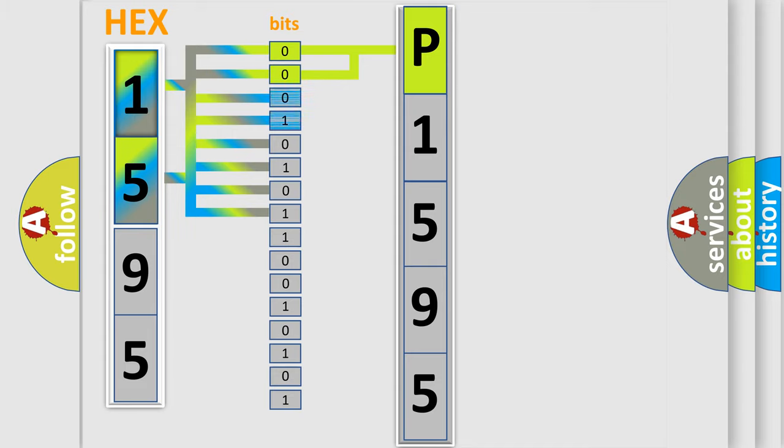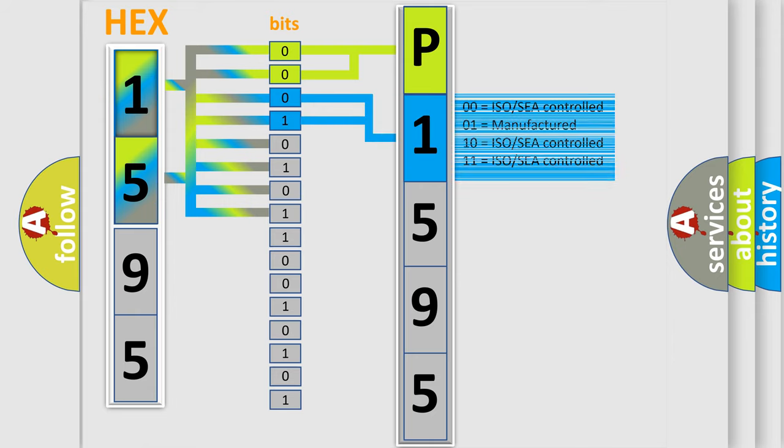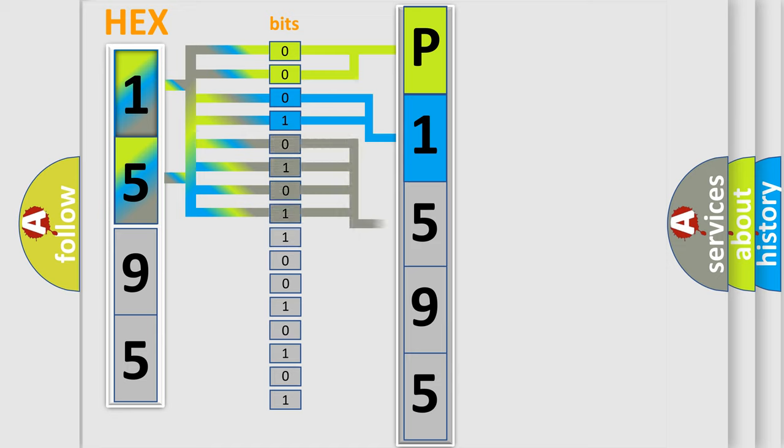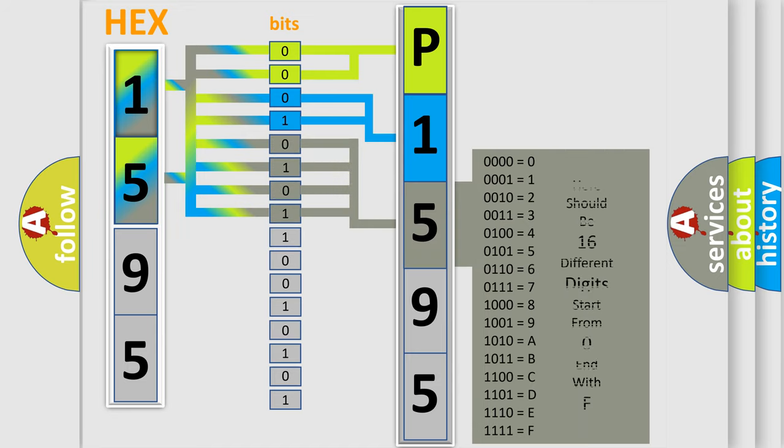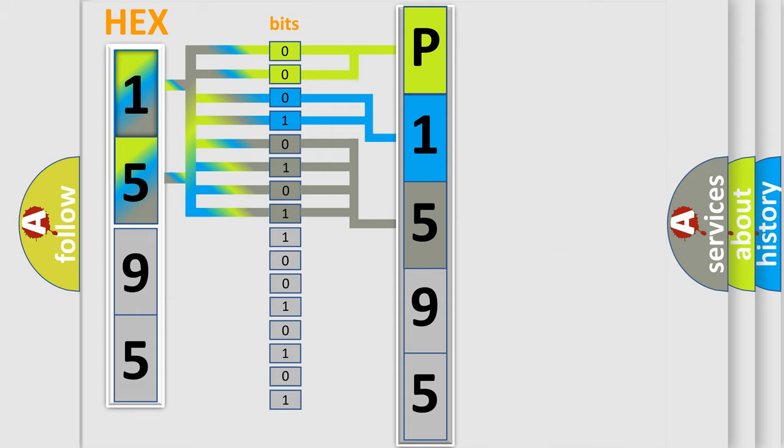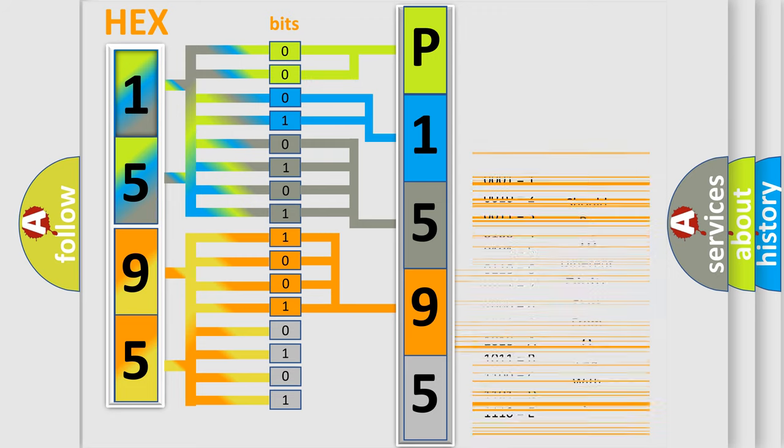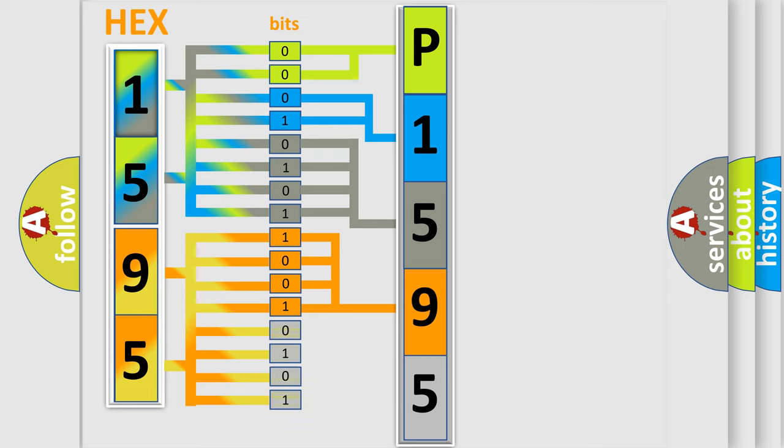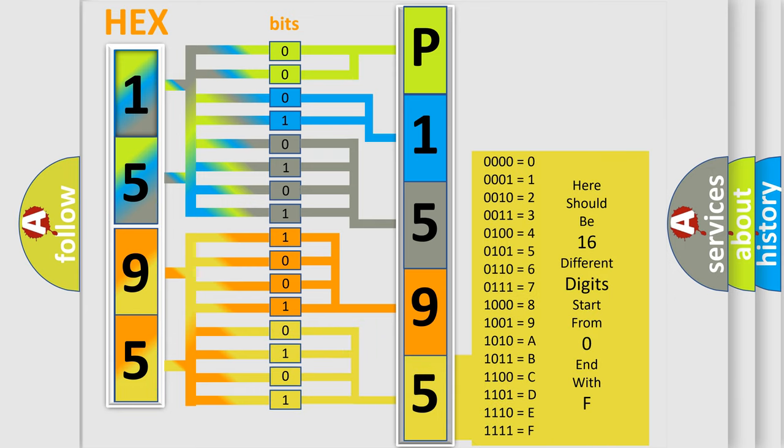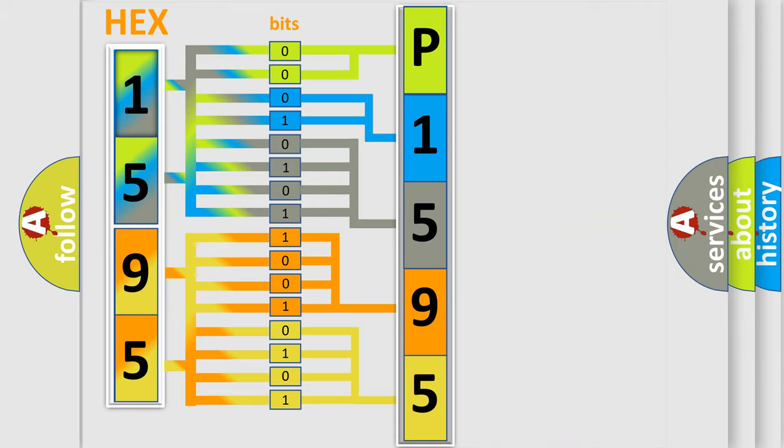The next two bits determine the second character. The last four bits of the first byte define the third character. The second byte is composed of eight bits. The first four bits determine the fourth character, and the last four bits define the fifth character. A single byte contains 256 possible combinations.